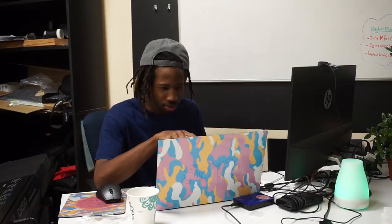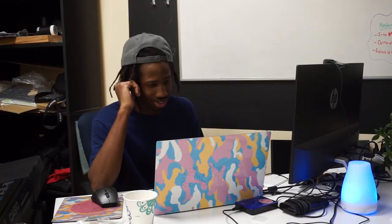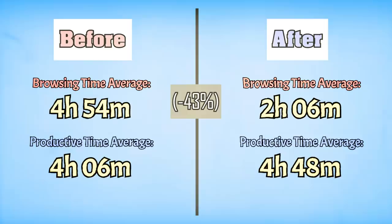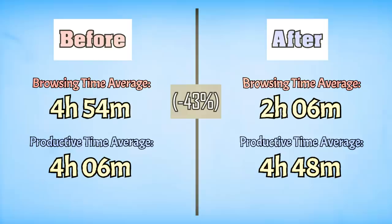Another week of data collecting went by and the results this time were better. My browsing time was reduced to two hours and six minutes a day, which was exactly what we wanted. But my productivity only jumped up to four hours and 48 minutes — that's only about a 15% increase. Back to the pie chart: awake for 17 hours, browsing for two, productive for five, which leaves 10 hours of undefined time. What am I doing in these extra 10 hours?